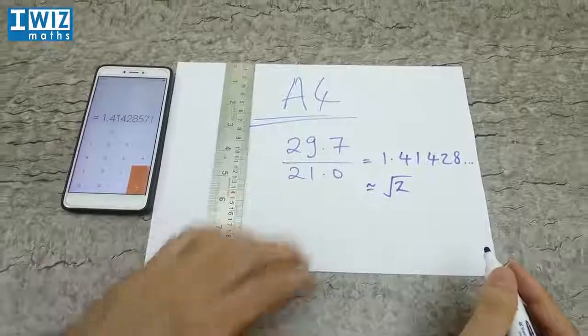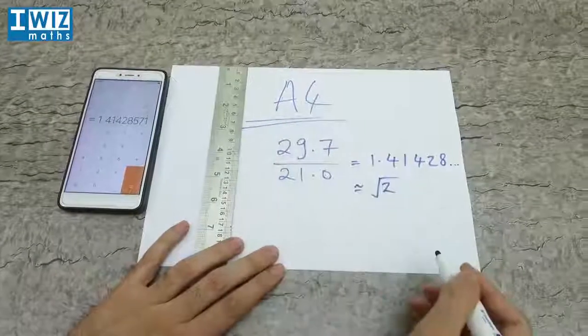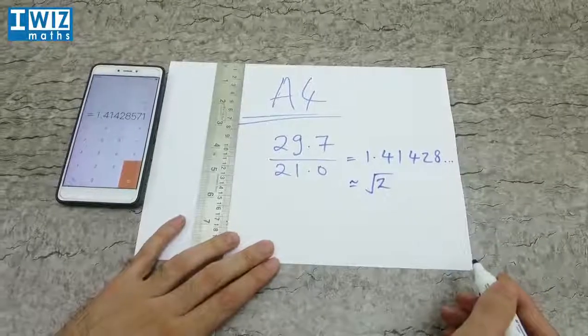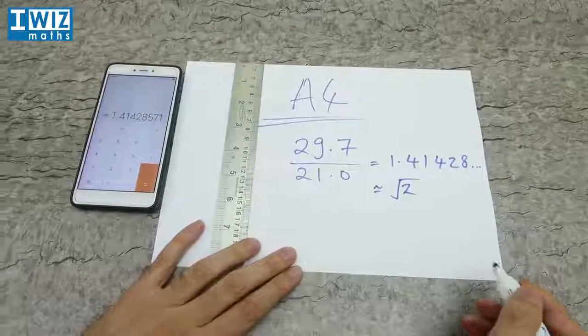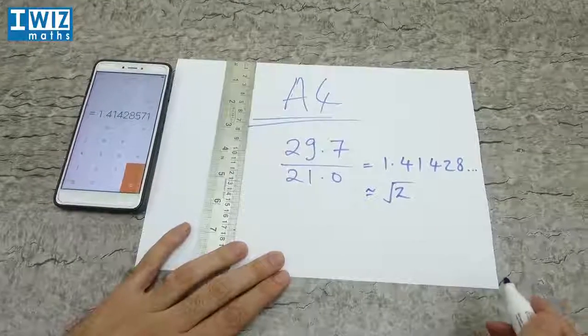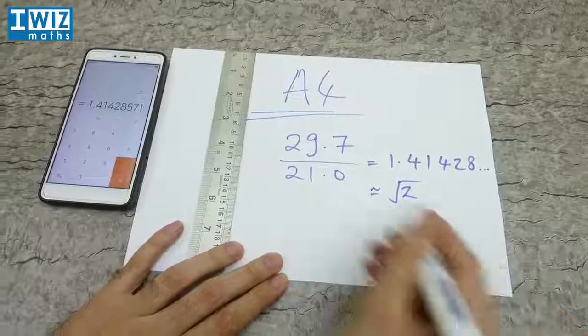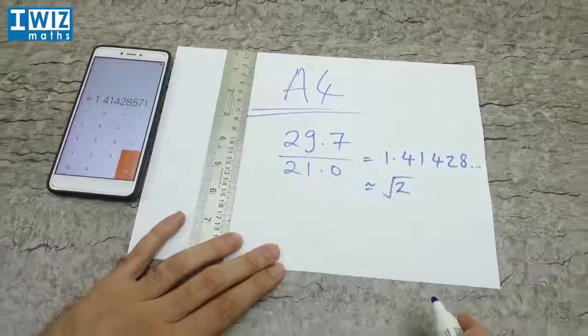That's really fascinating, isn't it? You've got this very simple A4 sheet of paper. We've done an extremely simple measurement right in front of you, and you can do this at home as well. We find that the ratio is the square root of 2.